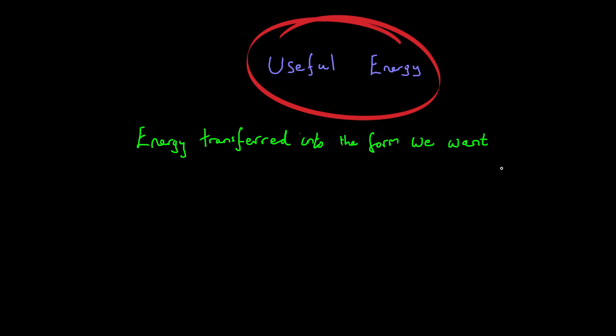Useful energy is when we transfer energy into something that we want. It's energy transferred into the form we want. For example, when you're driving a car, you're burning fuel in the engine and the form that you want the energy converted into is kinetic energy because you want your car to move. You don't really care whether the engine heats up.